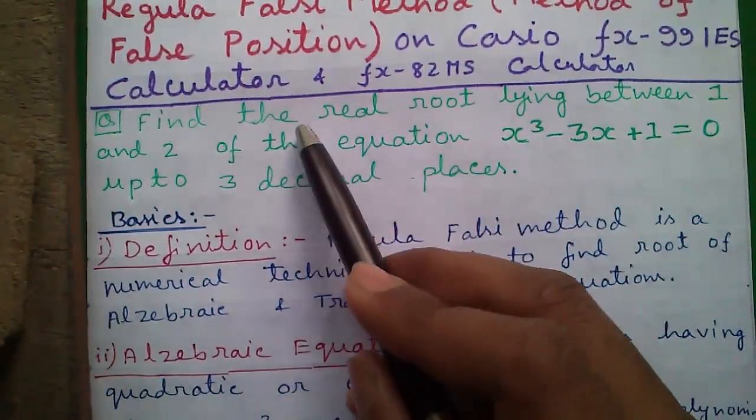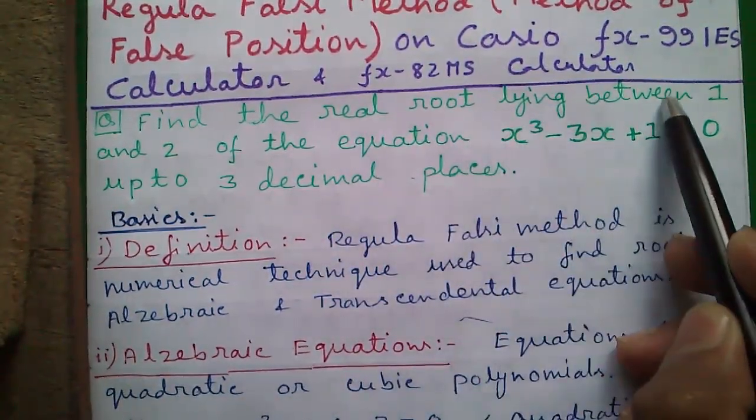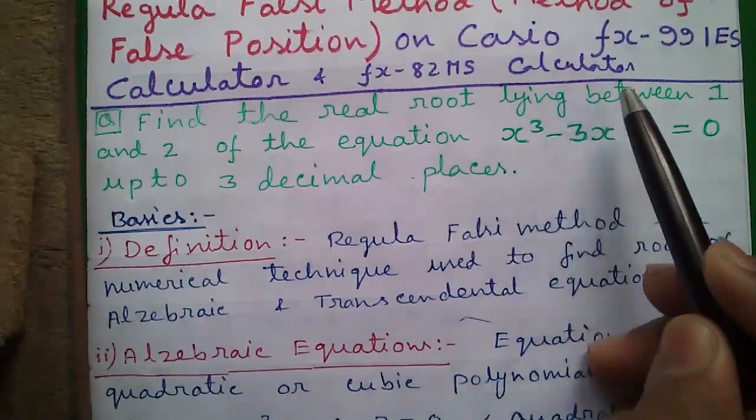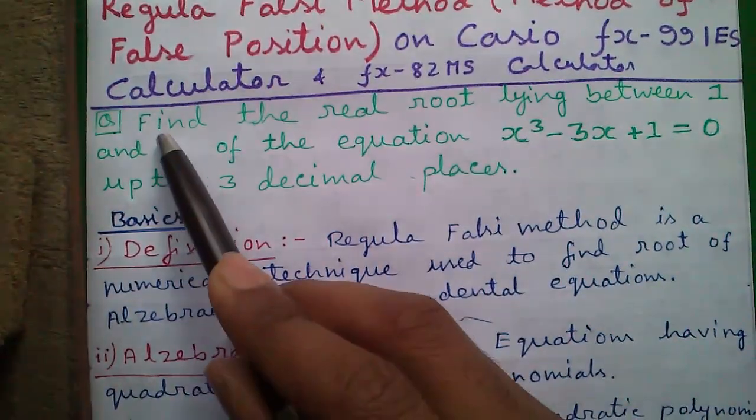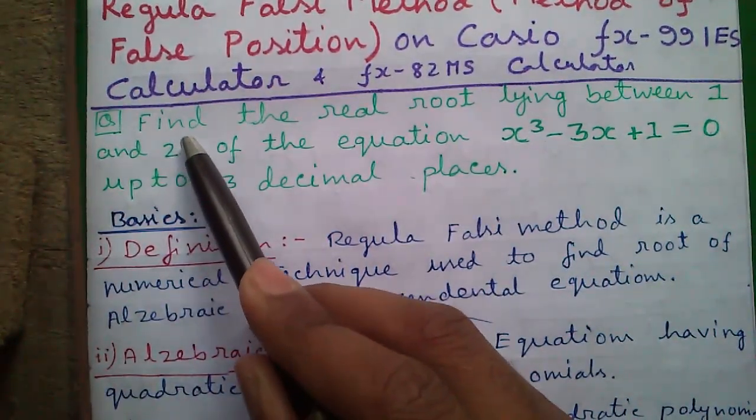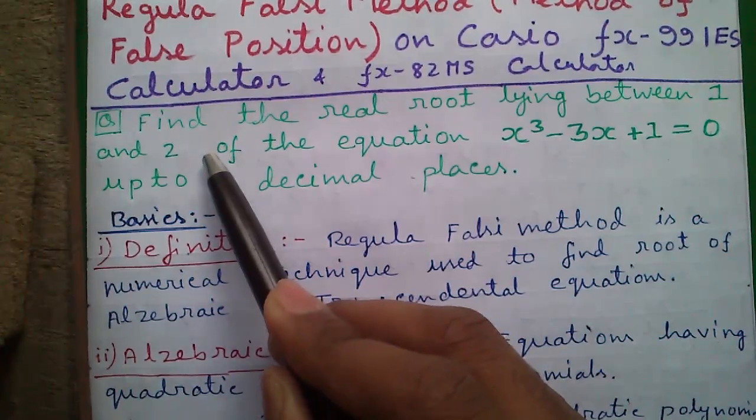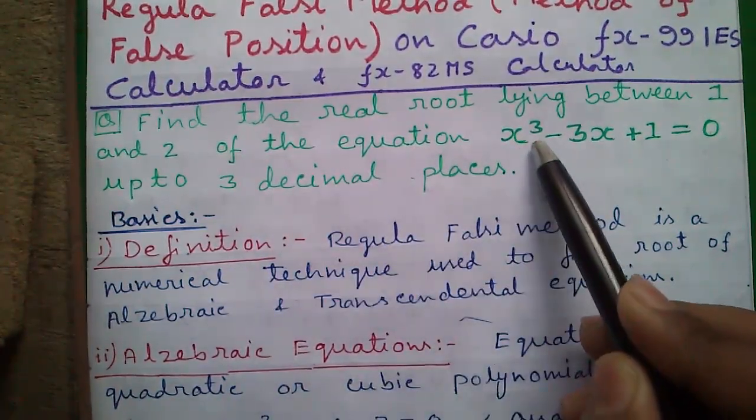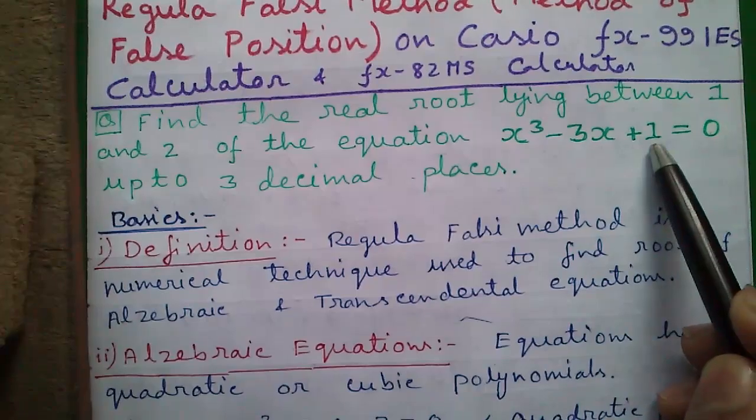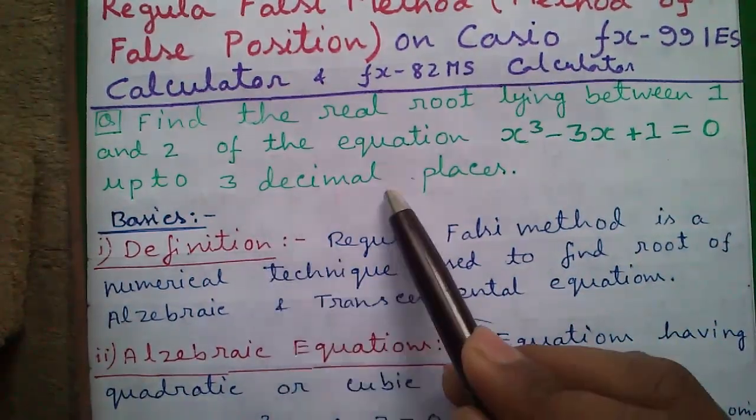Here is our question: find the real root lying between 1 and 2, this is called the range, this is the lower limit 1 and upper limit 2. In some questions the range may not be given, you may have to find it out yourself. Of the equation x³ - 3x + 1 = 0, up to 3 decimal places.